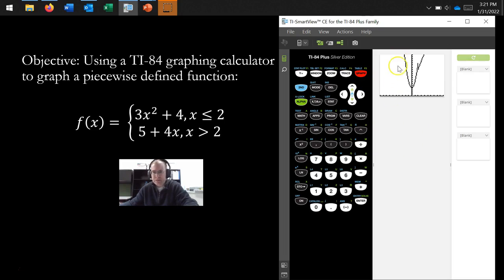So, when x is less than or equal to 2, we get a part of a parabola, we have basically a piece of the parabola, and then when x is strictly greater than 2, it becomes a linear function. In other words, we have a line right here. So, that's what the graph looks like.